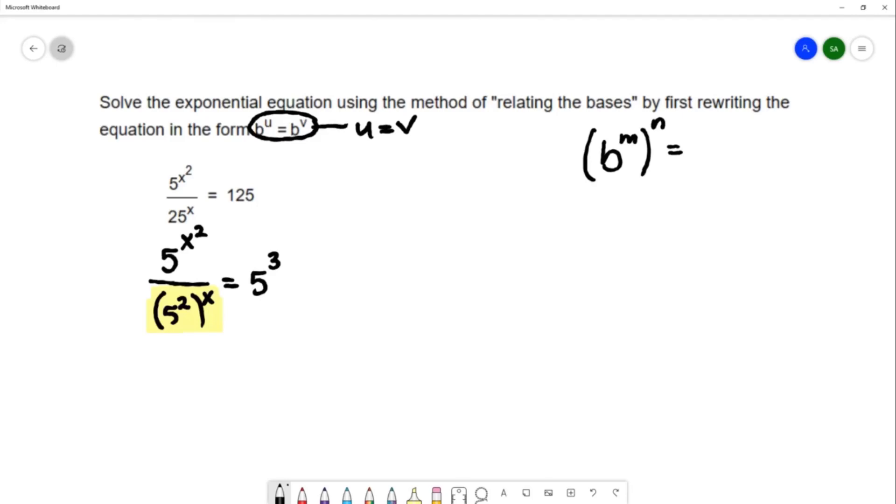When you have this situation, you simplify by multiplying the powers together. So b to the m to the n is b to the m times n. To simplify what I have highlighted in yellow there, we would have 5 to the 2x because 2 times x can be written as 2x.